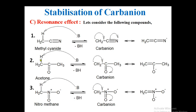In acetone, if the alpha hydrogen is detached, you get the carbanion in conjugation with the carbonyl group. Delocalization gives a resonating structure where the negative charge is on the more electronegative oxygen atom, providing greater stability. Similarly for nitromethane — removing the proton gives a carbanion showing the same resonance stabilization. The nitro group is a powerful electron-withdrawing group showing both minus-I and minus-R effects, stabilizing the carbanion very well.